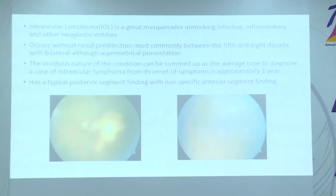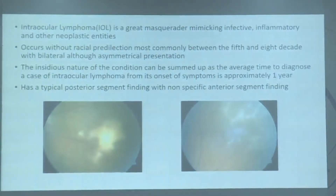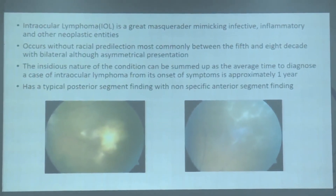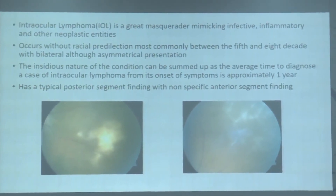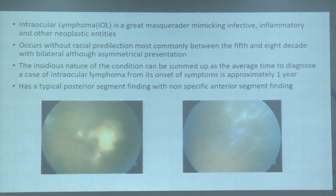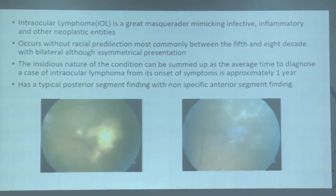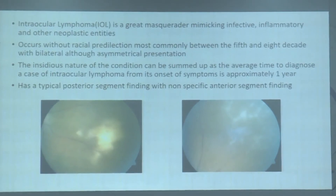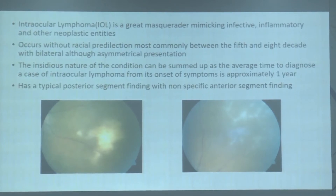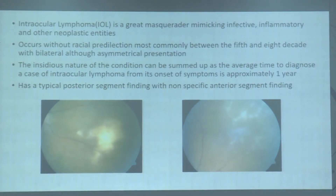As we know, intraocular lymphoma is a great masquerader. It masquerades infective, inflammatory and other neoplastic entities. What makes it very dangerous is its insidious growth. Compared to CNS lymphoma, where onset of symptoms to diagnosis averages 3 months, in intraocular lymphoma it is 1 year.